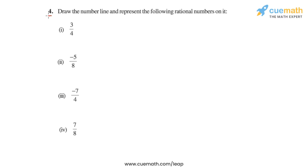In question 4 of this exercise, we are given these four rational numbers: 3 by 4, minus 5 by 8, minus 7 by 4, and 7 by 8. We have to draw the number line and represent each of these rational numbers on the number line.